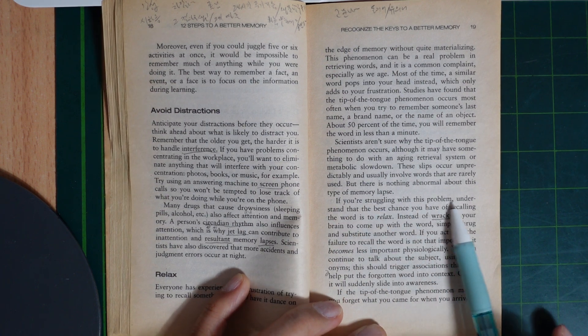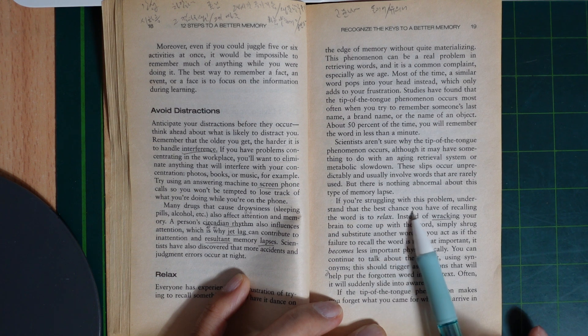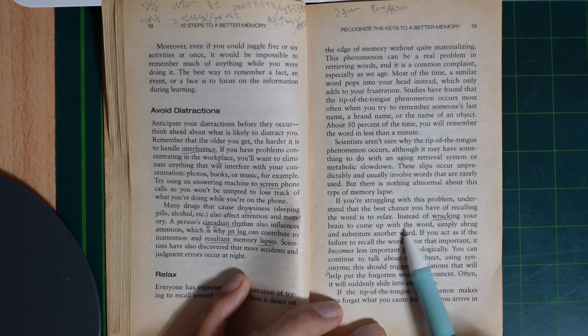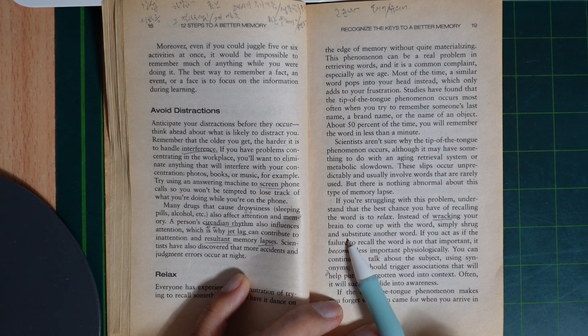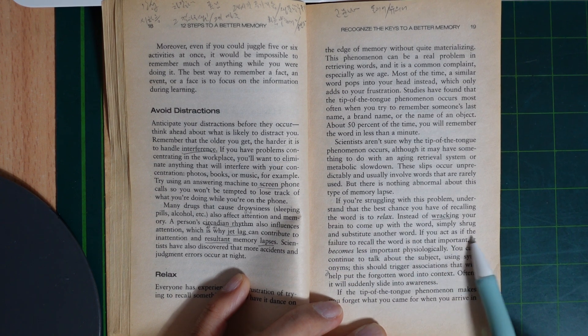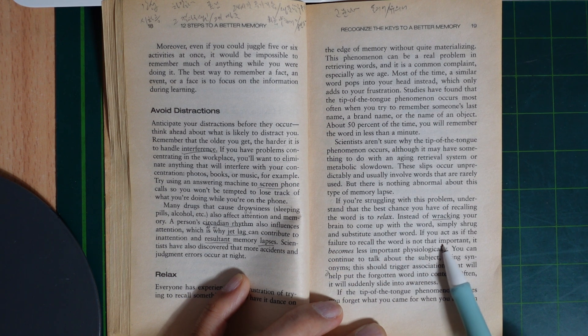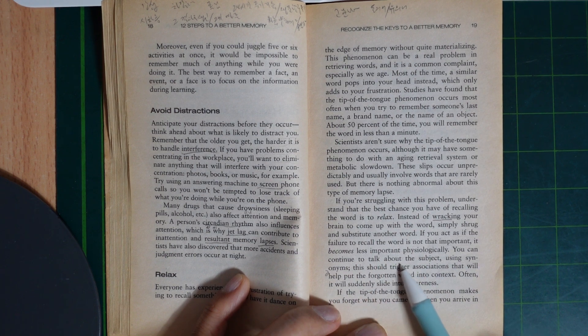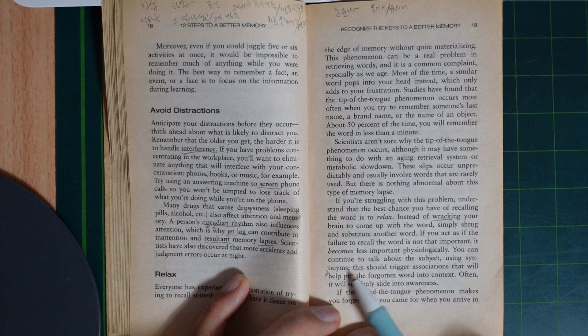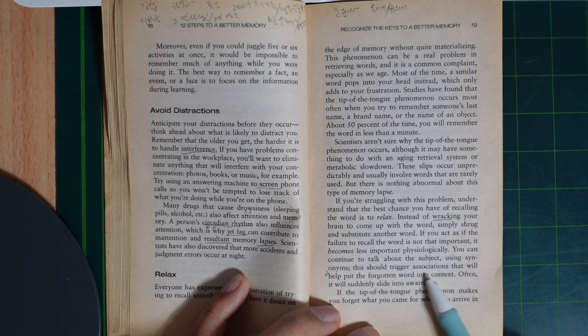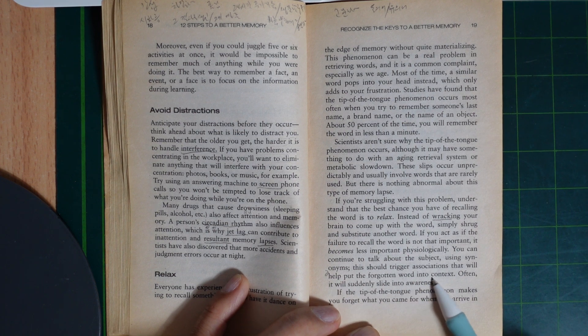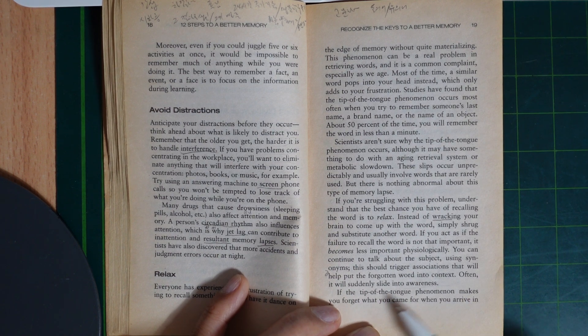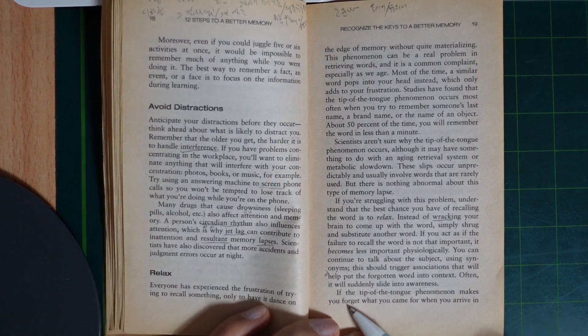If you are struggling with this problem, understand that the best chance you have of recalling the word is to relax. Instead of racking your brain to come up with the word, simply shrug and substitute another word. If you act as if the failure to recall the word is not important, it becomes less important psychologically. You can continue to talk about the subject using synonyms. This should trigger associations that will help put the forgotten word into context. Often, it will suddenly slide into awareness.